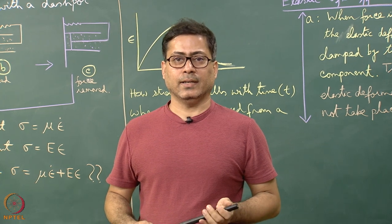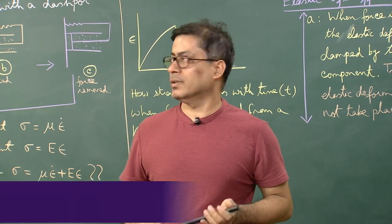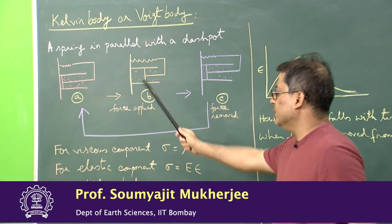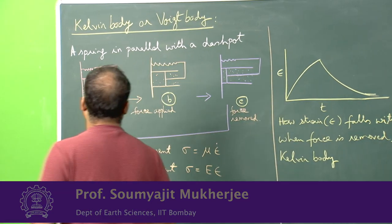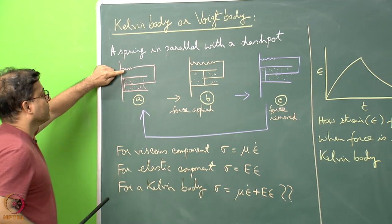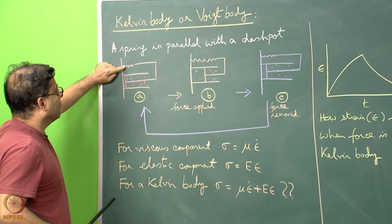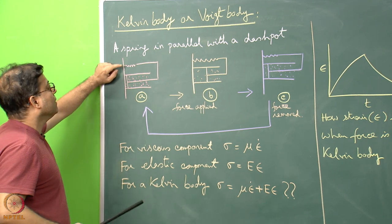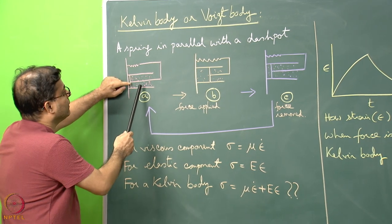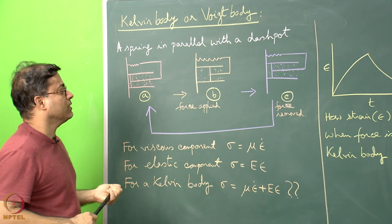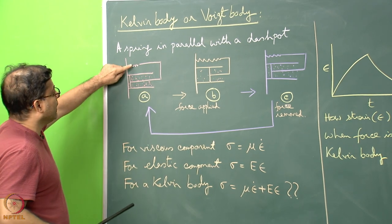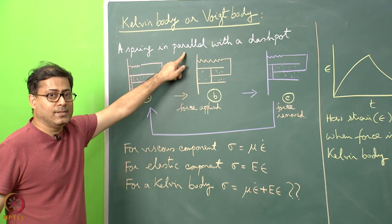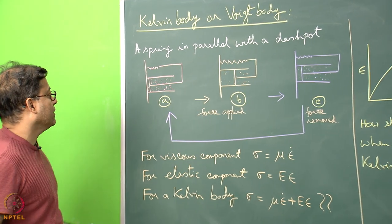We will now look at the Kelvin body or the Voigt body and its deformation in terms of the mechanical model. A spring indicates an elastic deformation and the dashpot can indicate the viscous deformation. In this case, the spring and the dashpot are arranged in parallel connection, not in series connection.